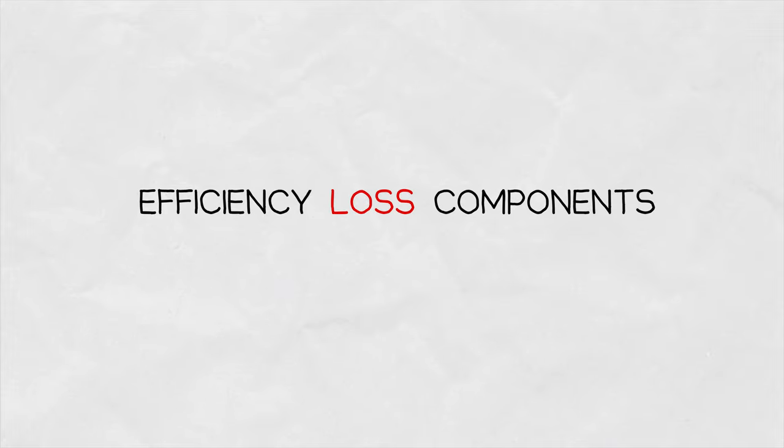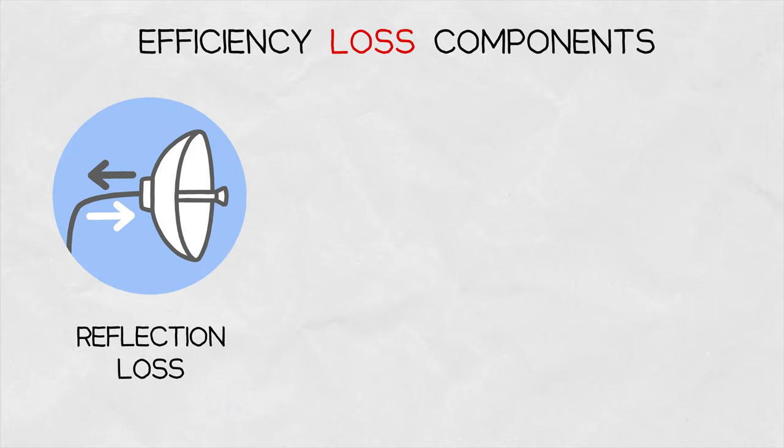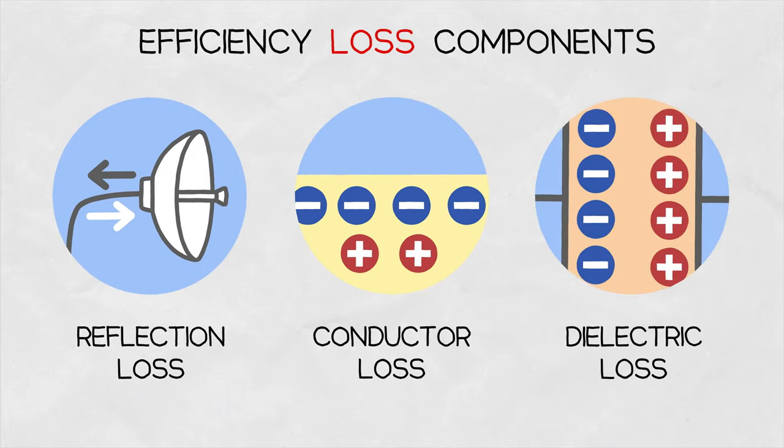There are three main components of the signal power loss decreasing antenna radiation efficiency: reflection loss or mismatch, conductor loss, and dielectric loss.